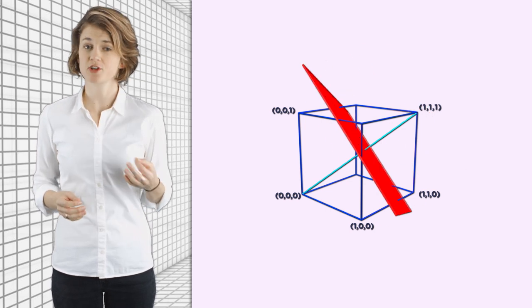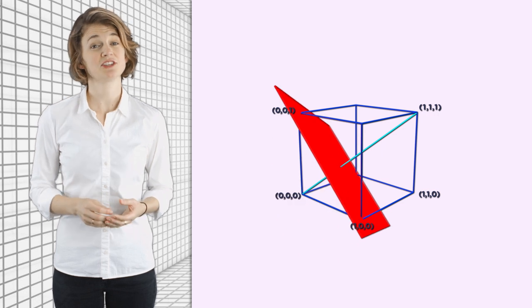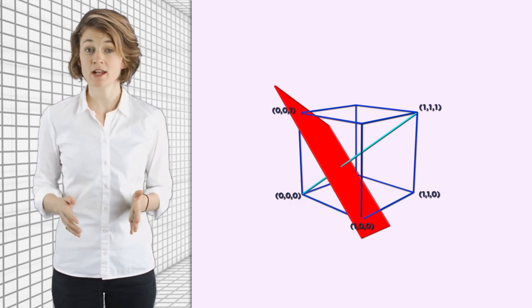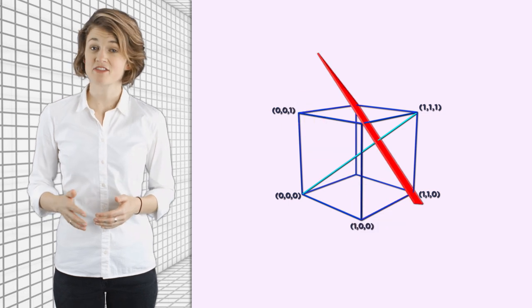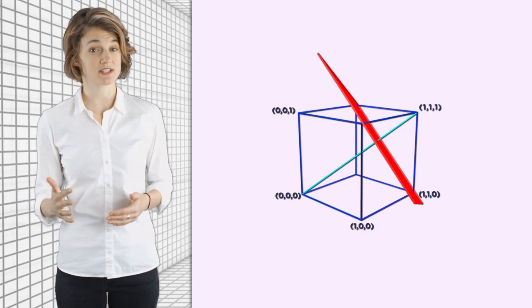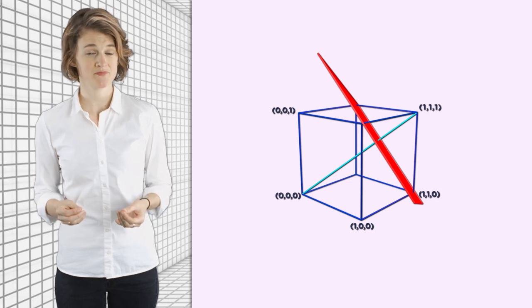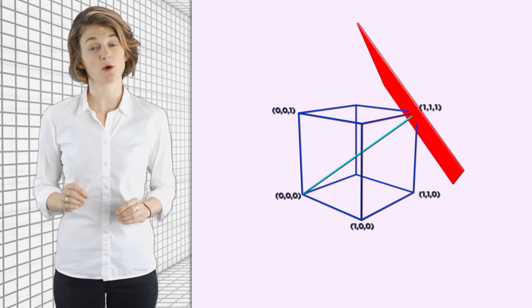First, it starts at 0, 0, 0. Then, it hits three vertices at once: 1, 0, 0; 0, 1, 0; and 0, 0, 1. Then, it hits three more vertices at once: 1, 1, 0; 1, 0, 1; and 0, 1, 1. And finally, it ends at 1, 1, 1.